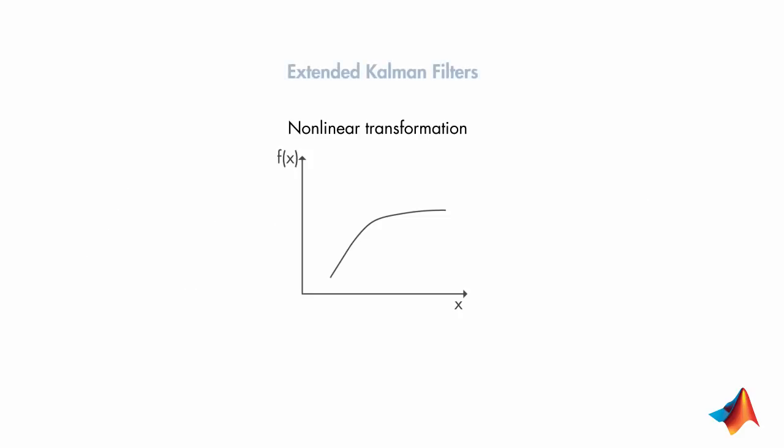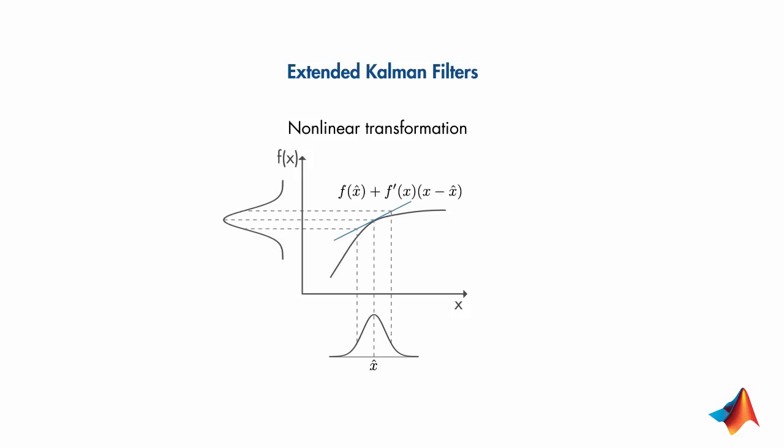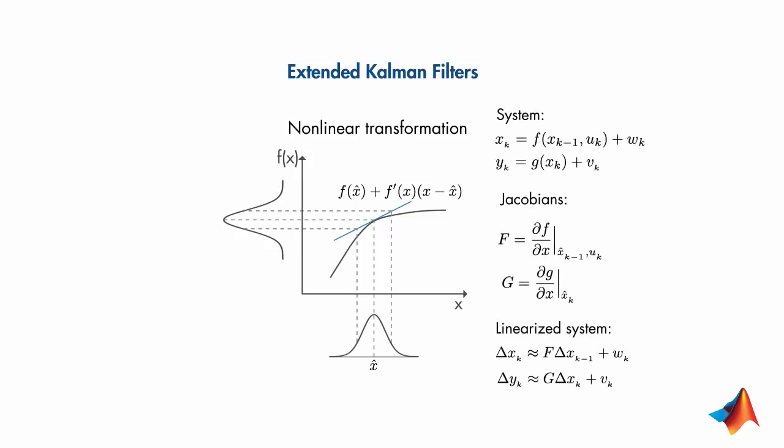In this case, you can implement an extended Kalman filter which linearizes the nonlinear function around the mean of the current state estimate. At each time step, the linearization is performed locally and the resulting Jacobian matrices are then used in the prediction and update states of the Kalman filter algorithm. When the system is nonlinear and can be well approximated by linearization, then extended Kalman filter is a good option for state estimation.